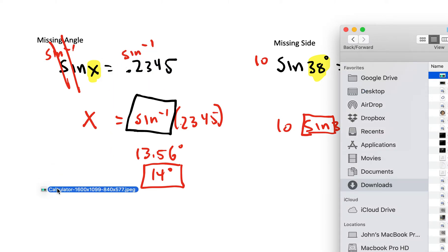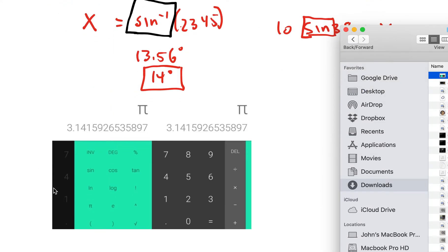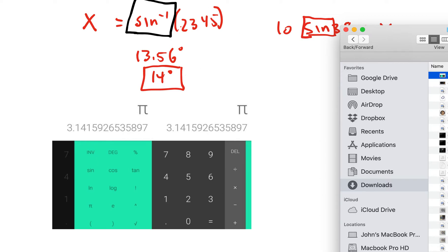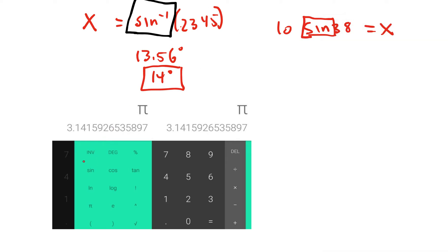If you're using an Android, you would actually not put the decimal first. You would first click inverse, and you'll see sine to the negative 1 comes up. Then you'll put the decimal, 0.2345. Then you'll push equal.